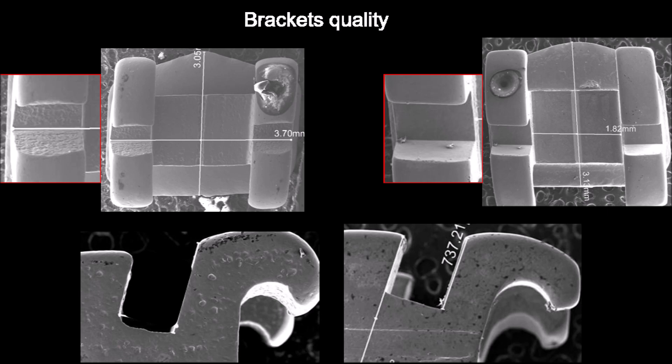Bracket quality: like in any process, the technique is subjected to quality control — the accuracy of the slot, the quality of the raw material, the finishing processes. This slide is a result of an investigation under a scanning microscope and has clearly shown the difference in quality of two brackets. In my next presentation, I will speak about the manufacturing technologies to clarify the difference between manufacturing technologies and their importance for the treatment process and result.